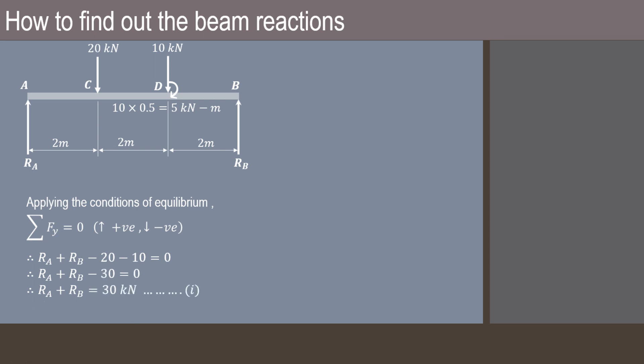Or RA + RB = 30 kN, that is our equation 1. Now applying another condition of equilibrium, summation of moments is equal to 0, clockwise positive and anticlockwise negative. Now we'll take moment about point A. Start with RB, the arrow of RB will be going in the anticlockwise direction towards A, so it is -RB. From B to A the perpendicular distance is 2 + 2 + 2 that is 6.